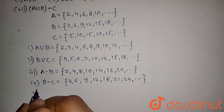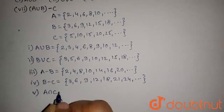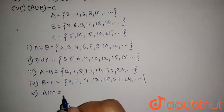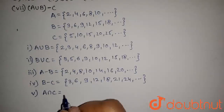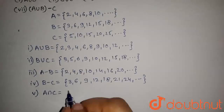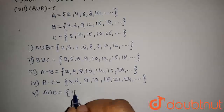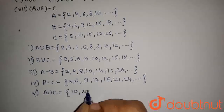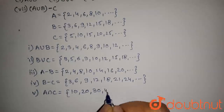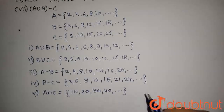The fifth part is to find A intersection C. A intersection C will contain all the natural numbers which are multiples of 2 as well as multiples of 5. So this set will contain elements 10, 20, 30, 40, and so on.